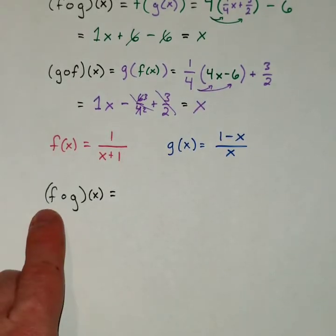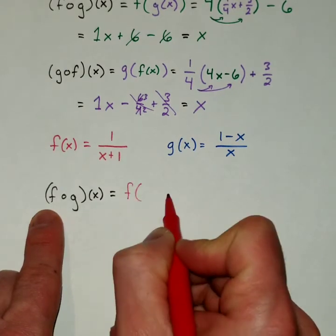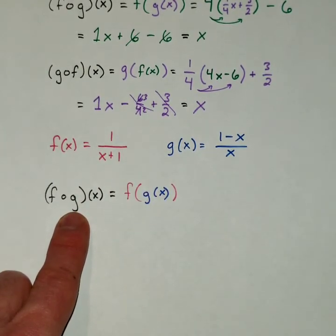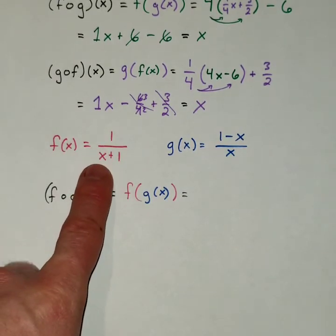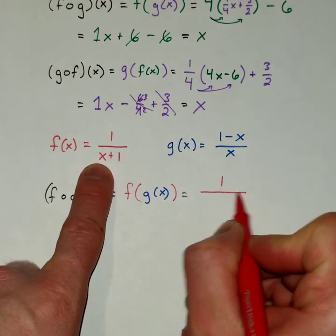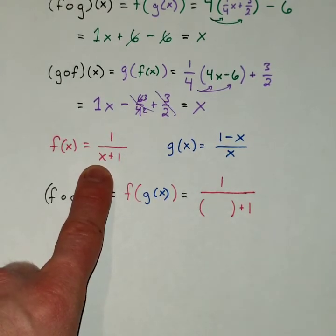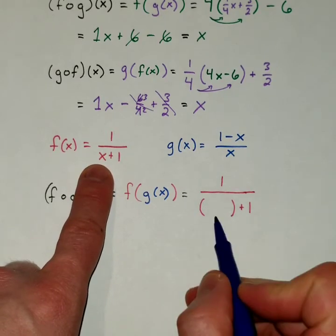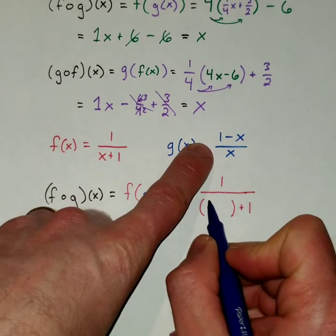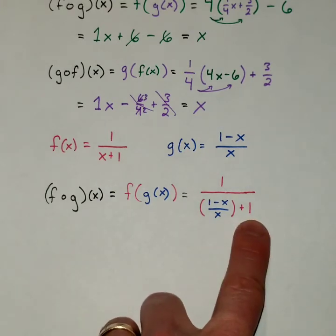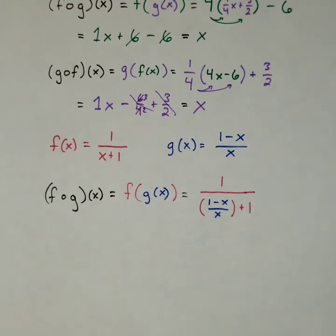Again, the outer function f is going to be red, and the inner function g is the blue one. My outer function — the red one — I'm going to replace the x with an empty set of parentheses, and then substitute into that set of parentheses the inner function, which is 1 minus x over x. Now, that does look pretty nasty, but we can simplify by adding the two terms in the denominator and doing another copy-dot-flip like we did in the last video.